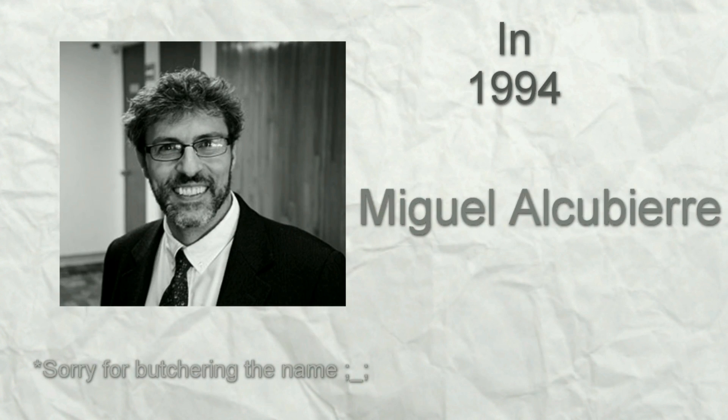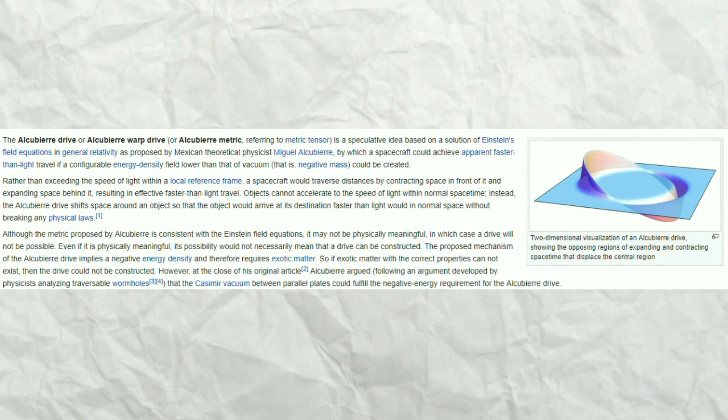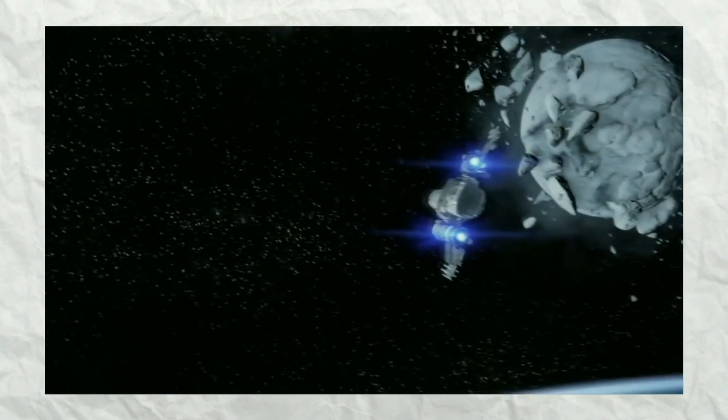While Einstein's special theory of relativity put a galactic speed limit, in 1994 a Mexican physicist Miguel Alcubierre came along with the proposed method for stretching the fabric of spacetime in a way which would in theory allow FTL travel to take place. And what is the first thing that happens when we are about to start a quantum travel? Yeah, we get stretched out.